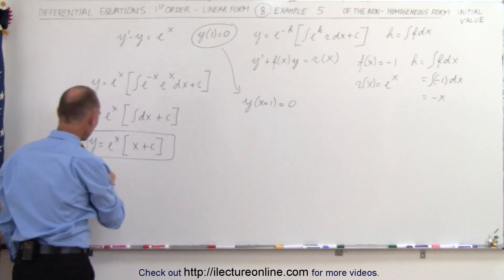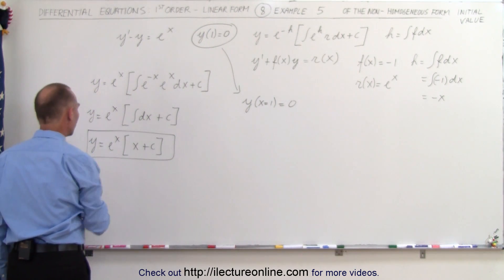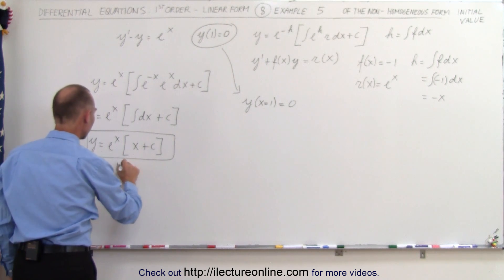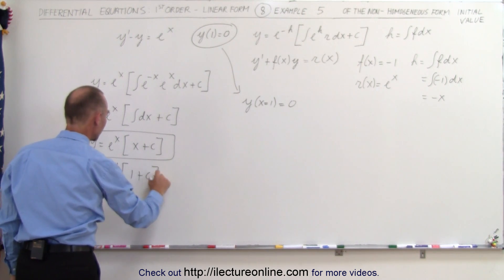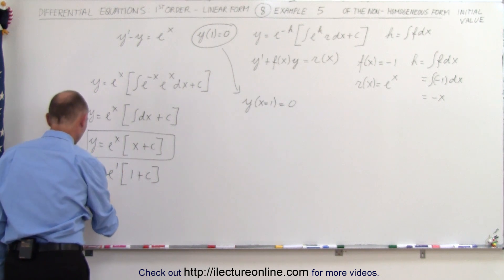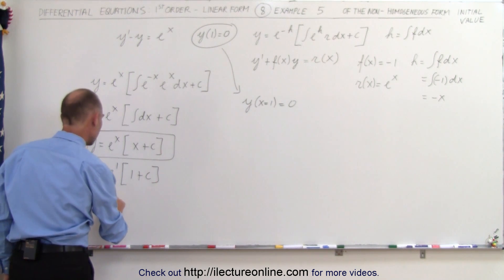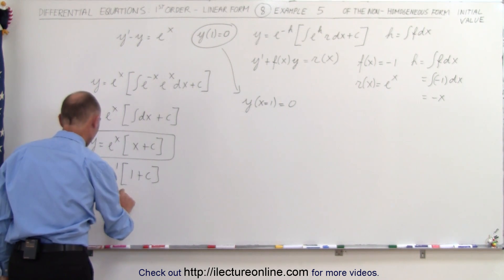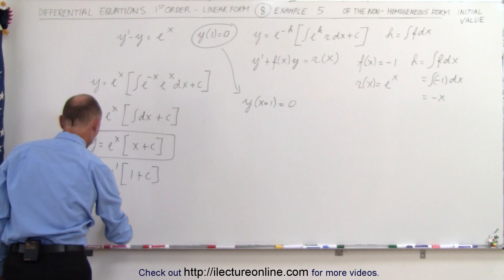So what that means is that we can plug in 0 for y, so that would be equal to e to the x. When x is equal to 1, so e to the 1 times 1 plus c. And so we have 0 is equal to, we can divide both sides by e, so we can say 1 plus c, or c is equal to minus 1.